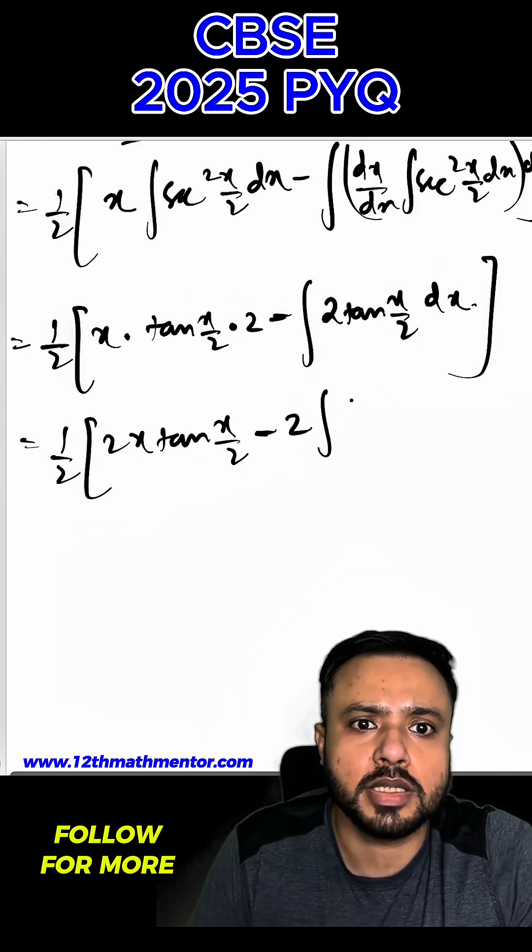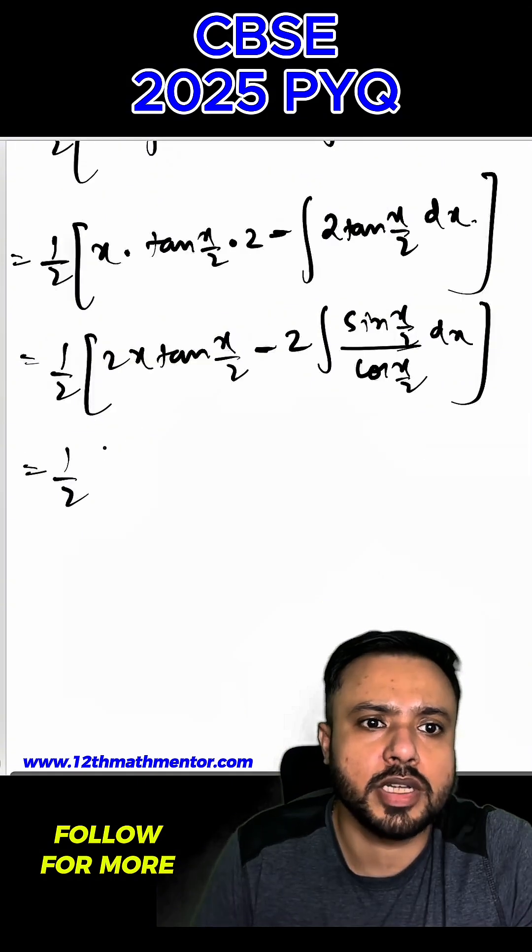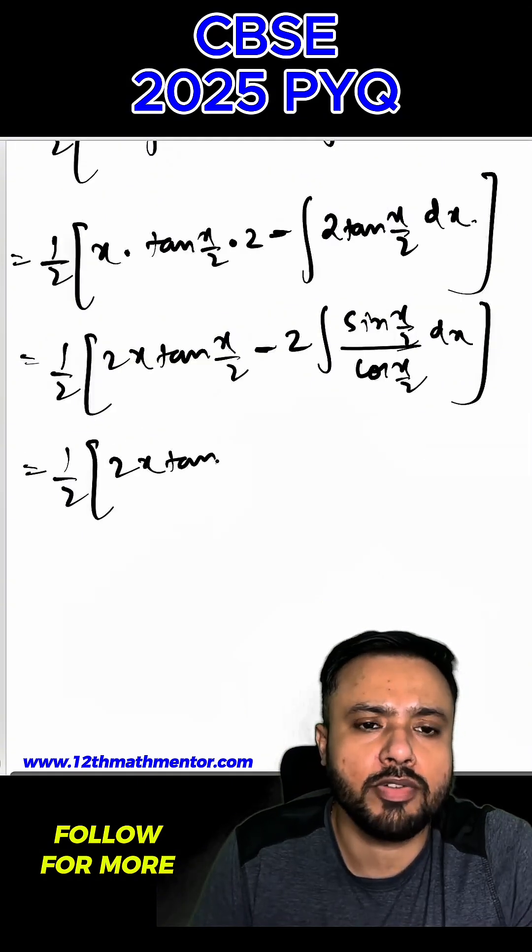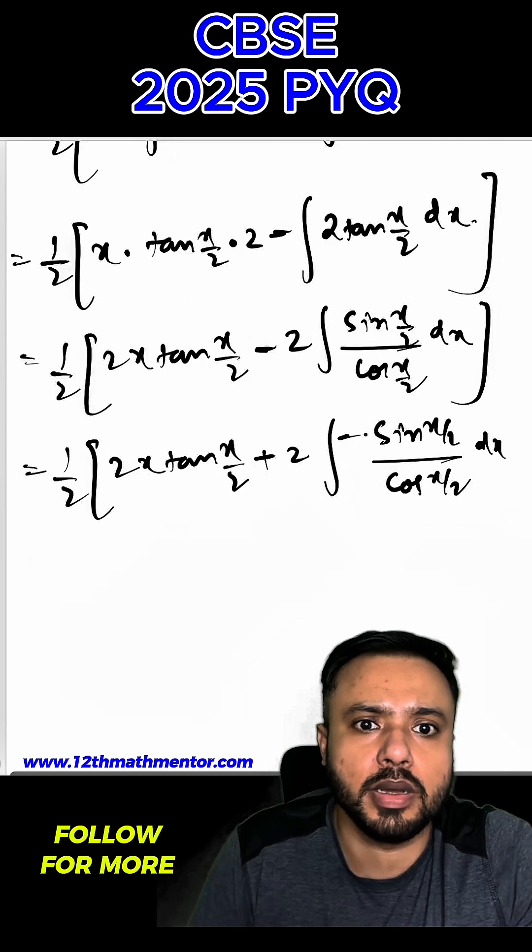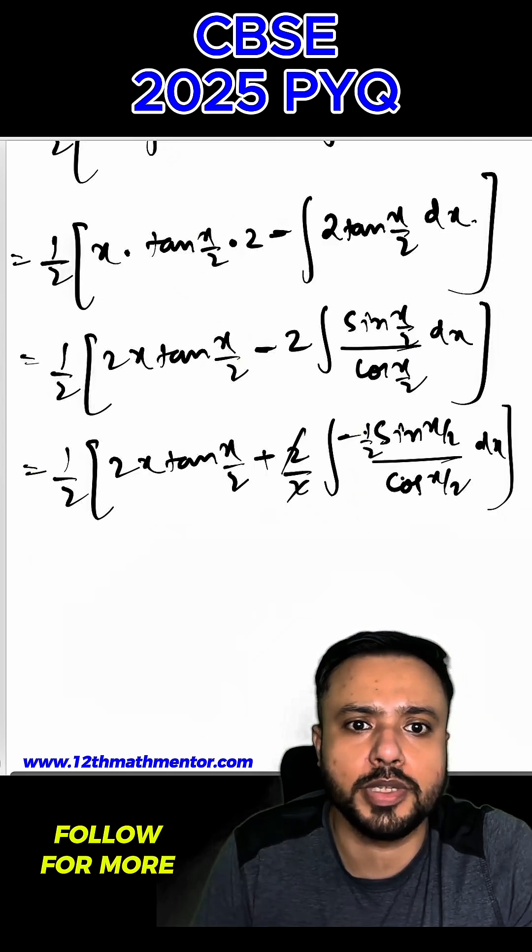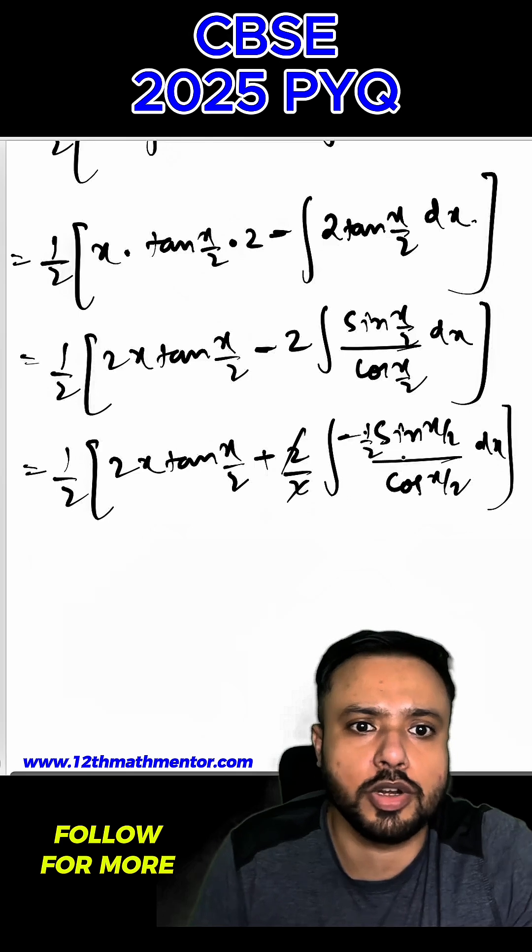Now to integrate this tan of x by 2, I am going to write it as sin of x by 2 upon cos of x by 2 dx, which I can write as 1 by 2, 2 x tan of x by 2 plus 2 minus of sin x by 2 upon cos of x by 2 dx. Now I am going to multiply here by 1 by 2 and here also by 2. So this 2 and 2 is gone. Basically I have done all of this to bring the derivative of cos x by 2 here in the numerator.